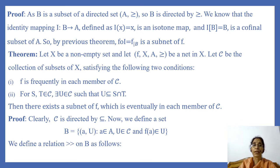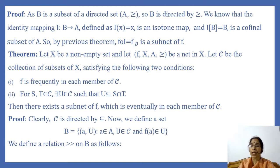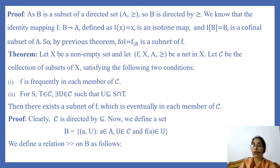Let us prove the corollary. Since B is a subset of directed set (A, ≥), B is directed by the relation ≥. The identity mapping I from B to A defined by I(x) = x is an isotone map, and I(B) = B is a cofinal subset of A. So both conditions of the previous theorem are satisfied, and F ∘ I is a subnet of F. Since F ∘ I is the restriction of F to B, the restriction of F to B is a subnet of F.